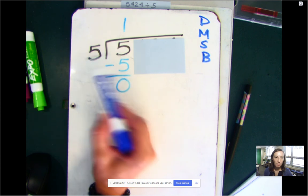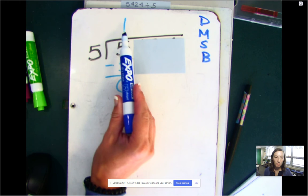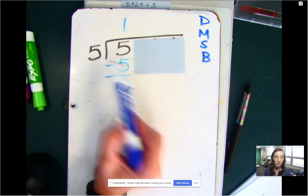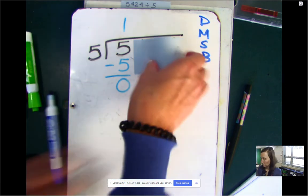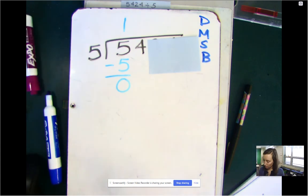We first divided, we said five goes into five one time. We multiplied one times five is five. Then we subtracted five. And now we're at our next step, which is to bring down the next number. In this case, the next number is four.